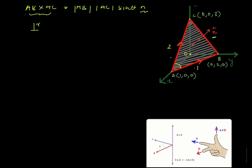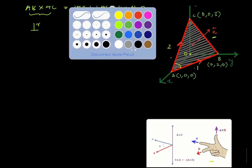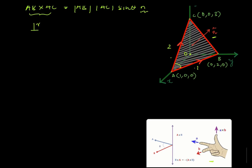To know more about the directions of the cross product, this figure is a good reference point, and the right-hand rule is generally the best way to find out what exactly is the direction of the vector cross product. So let's go ahead and find AB cross AC.